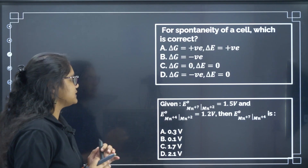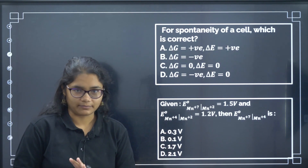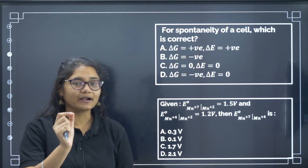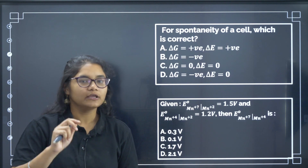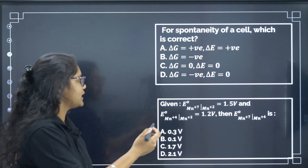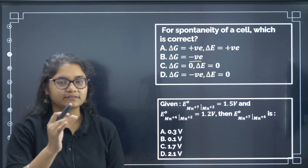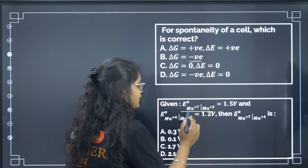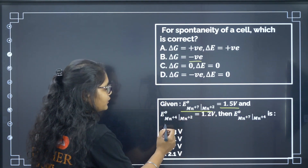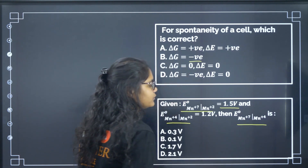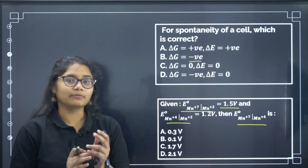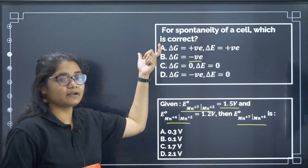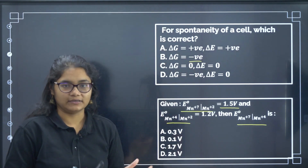Here is an example: two questions came in the same year's paper. One question on the spontaneity of a cell — which is correct? This will take hardly 5 to 10 seconds if you know the concept; delta G should be negative. But another question from the Latimer diagram — Mn⁷⁺/²⁺ given as 1.5V and ⁴⁺/²⁺ given, then ⁷⁺/⁴⁺ is asked — requires more time and may not be solvable in one minute. Whatever time saved from the easier question should be utilized here.